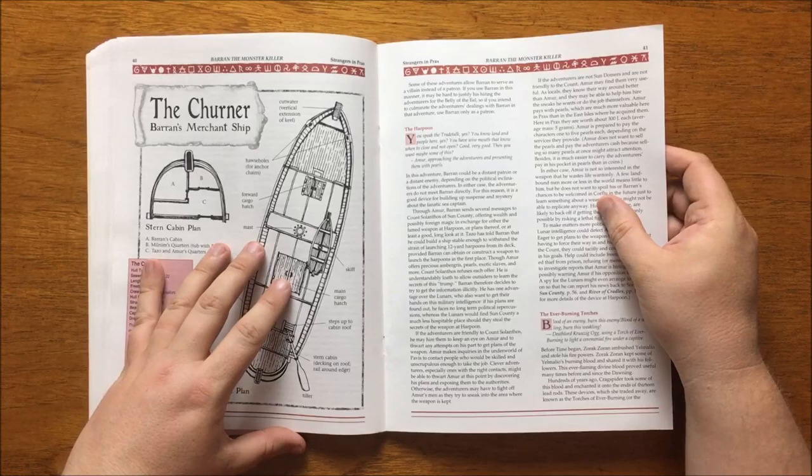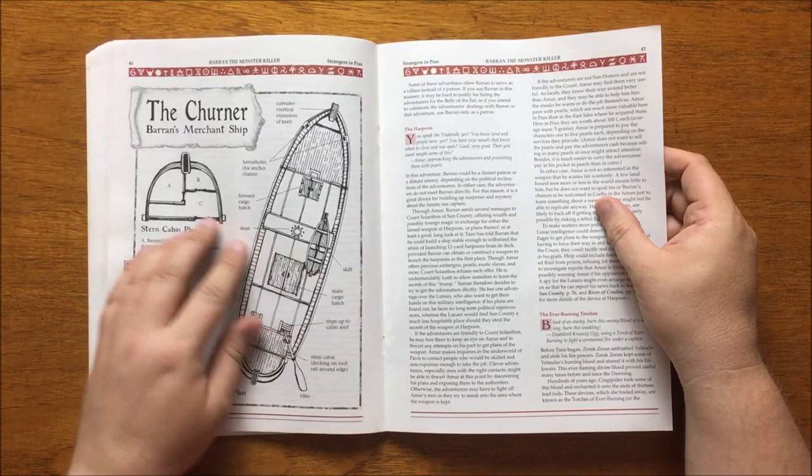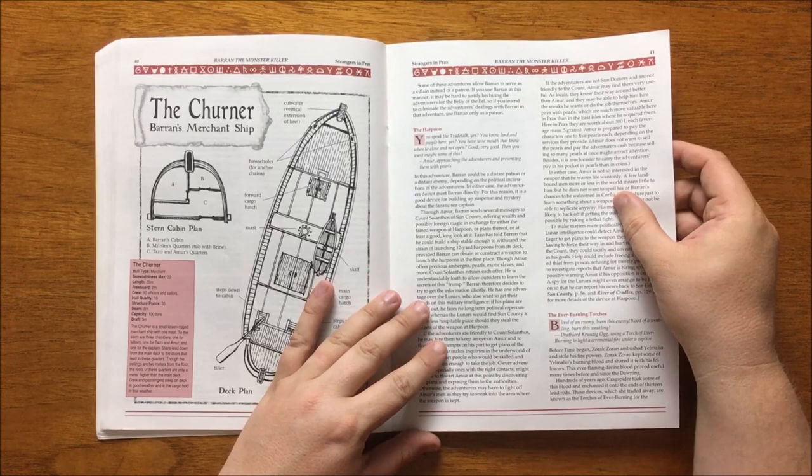It then details his fellow crewmen, including Amor Anzed, a priest of Dormal, Mildim Sharkblood, a Ludoc Merman, and Tazo the shipbuilder from the Eastern Isles. These are all valuable to Baron. It then gives you a simple map of his ship, the Churna, and then goes on to provide you with some adventure hooks.